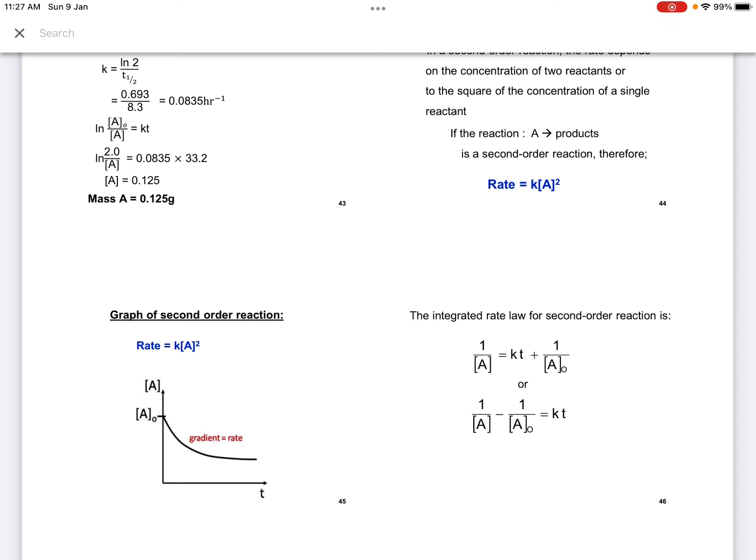Graph of second-order reaction. If we plot concentration versus time, it is similar to the first-order graph. You get a curve with the interception at y-axis known as A0. However, the integrated rate law for second-order will be different: 1 over A equals to KT plus 1 over A0, or 1 over A minus 1 over A0 equals to KT. All the integrated rate formulas students must memorize.